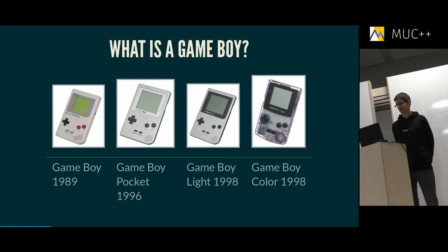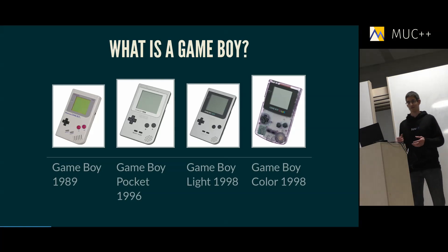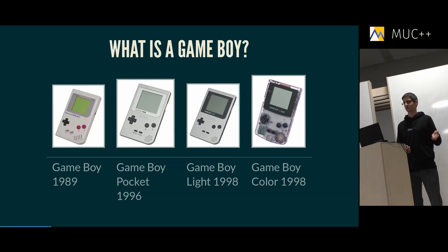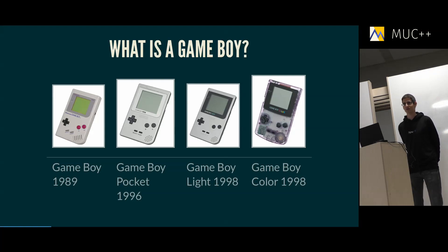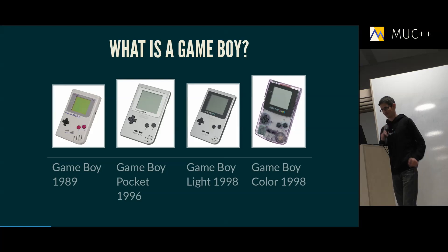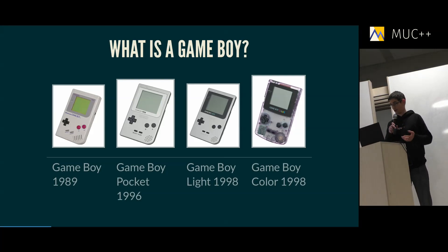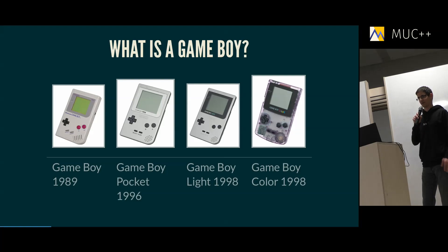There have been follow-ups, like the Gameboy Pocket, which has a much better display and smaller housing so it fits in your pocket. There's the Gameboy Light, which has an illuminated display so you can play at night — for some reason it was only released in Japan. And there's the Gameboy Color, which has twice the amount of RAM. Over these four devices, in total around 200 million Gameboys have been sold.